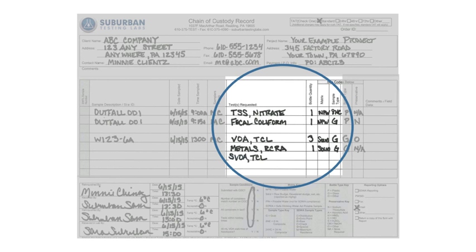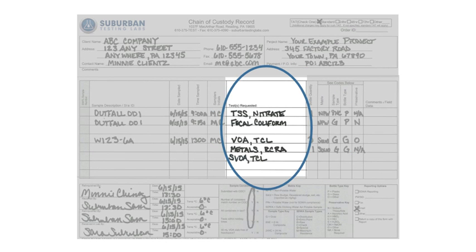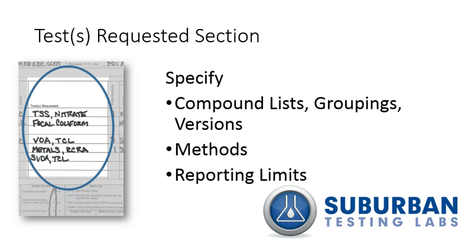Today, we're going to discuss this section of the Chain of Custody form, which tells a story about your sample. First, let's talk about the Tests Requested section. It's important to know that there are various compound lists, groupings, and even versions for almost every method we run in our lab.